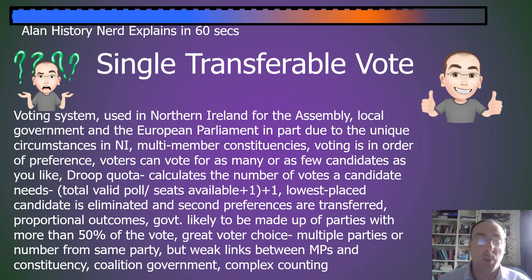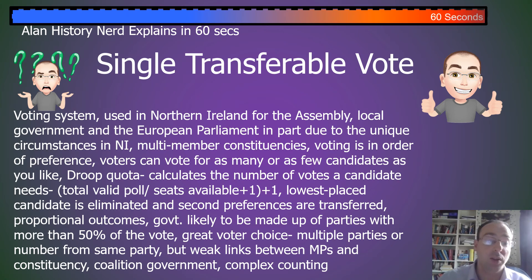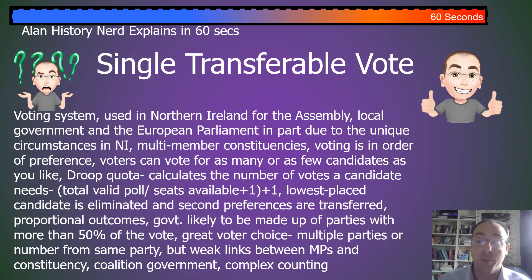It gives fairly proportional outcomes and the government is likely to be made up of a party or parties with more than 50% of the vote. It gives great voter choice because you can choose to vote for multiple parties or for multiple people from the same party, but it gives weak links between MPs and constituencies. It tends to lead to coalition government and it is very complicated to count.